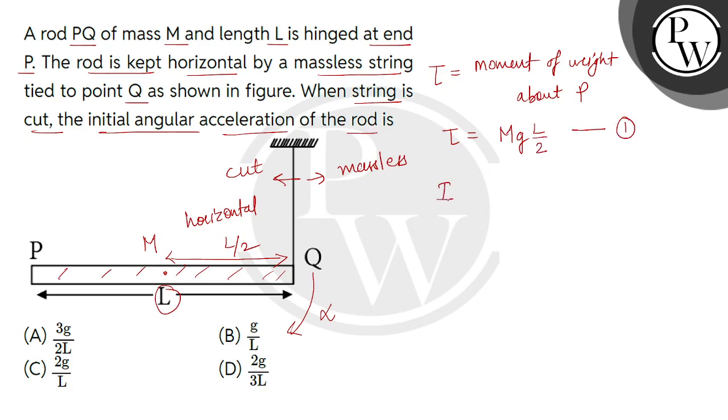Now, we can find moment of inertia of the rod about point P. Point P will act as an end, so this is equals to ML squared divided by 3. So this is equation number 2.